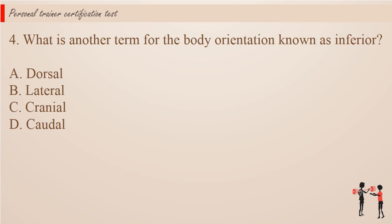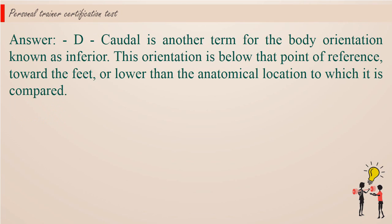Question 4. What is another term for the body orientation known as inferior? a. Dorsal. b. Lateral. c. Cranial. d. Caudal. Answer: d. Caudal is another term for the body orientation known as inferior. This orientation is below that point of reference, toward the feet, or lower than the anatomical location to which it is compared.